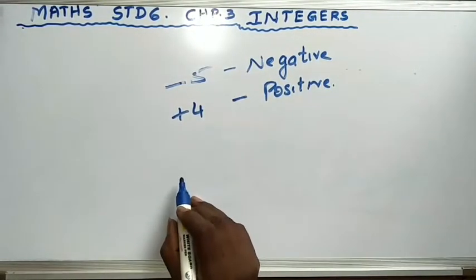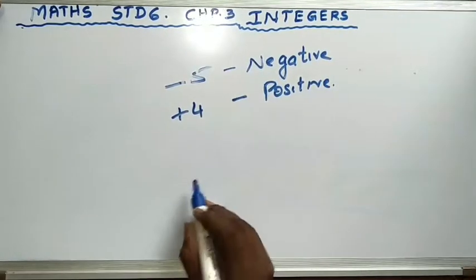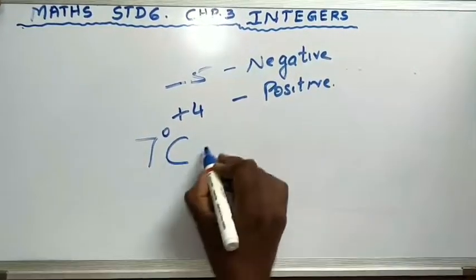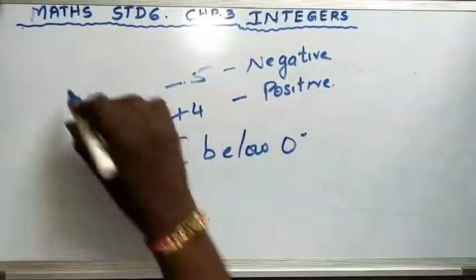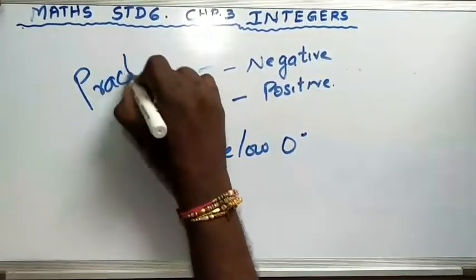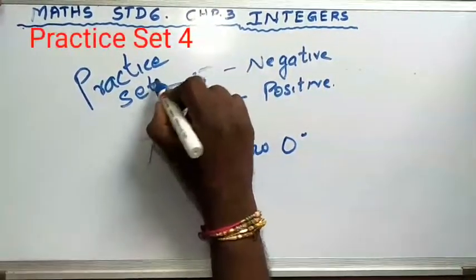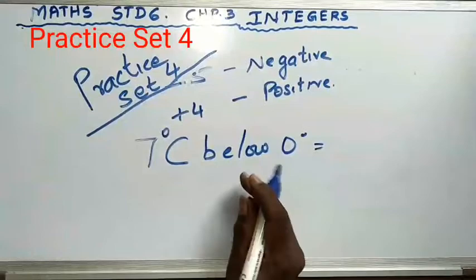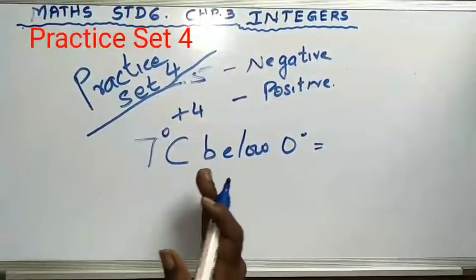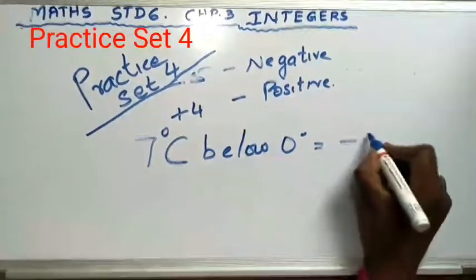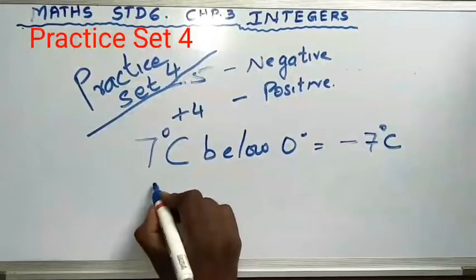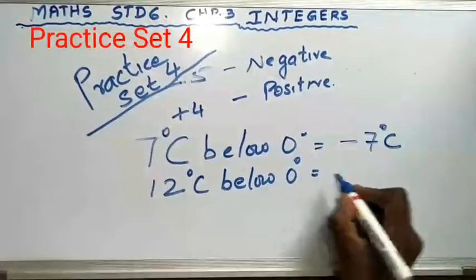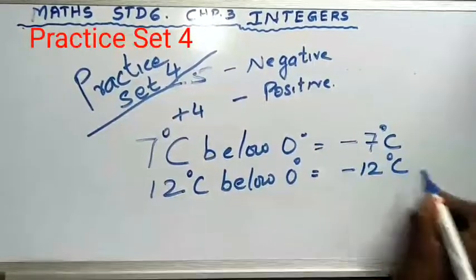The second sum is: write the temperatures in some cities using a proper sign. First, 7 degrees Celsius below 0. Now, below 0 means minus 1, minus 2, minus 3 — so the word 'below 0' means it is negative. So you have to write minus 7 degrees Celsius. Second, 12 degrees below 0 — again 'below' comes, so it is minus 12 degrees Celsius.